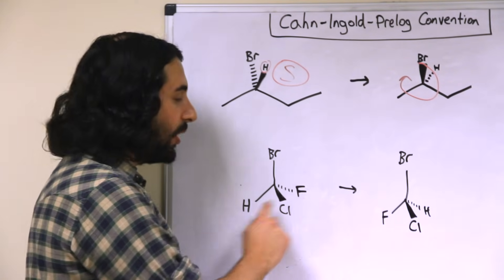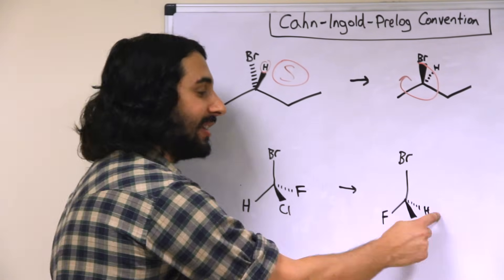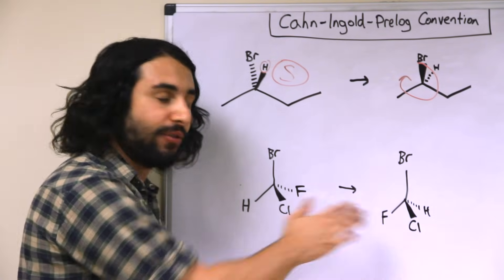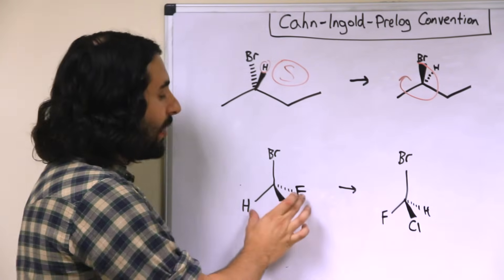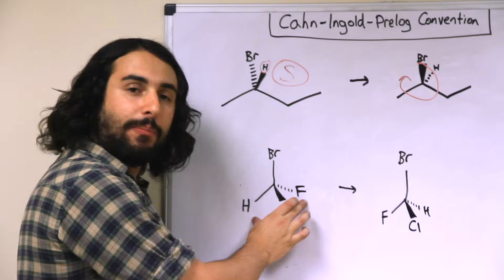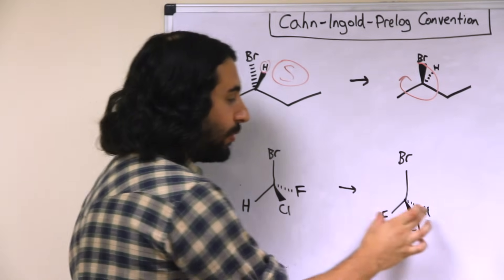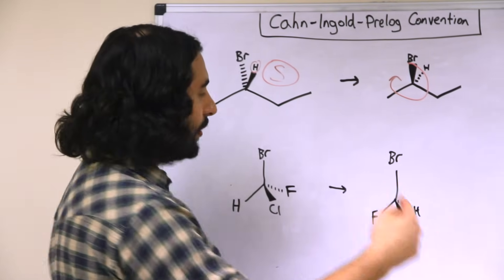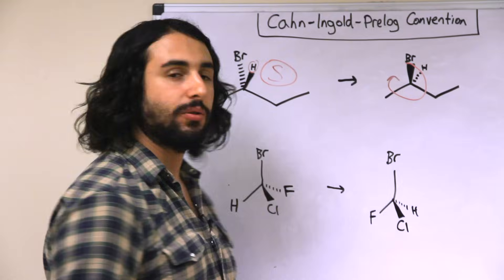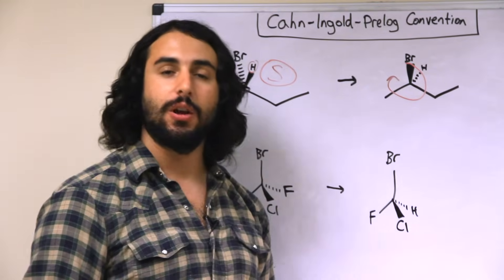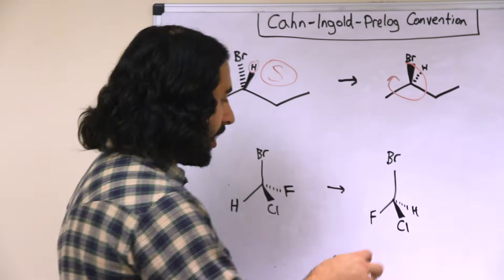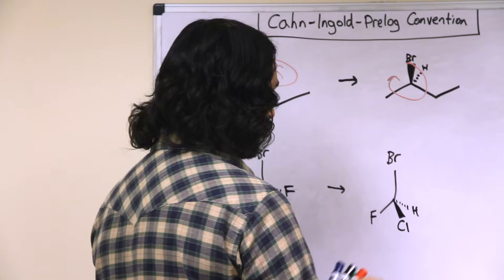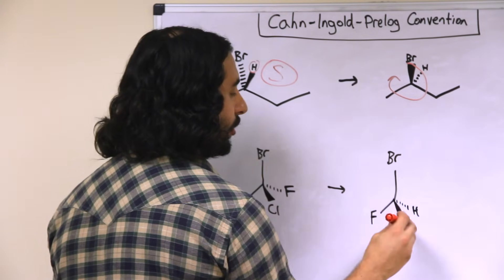We can arbitrarily swap the hydrogen and the fluorine like this, and now simply by looking toward the board we are able to assess what's going on. We would see bromine, chlorine, fluorine.